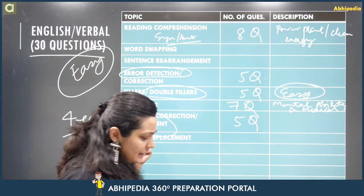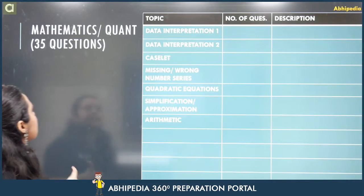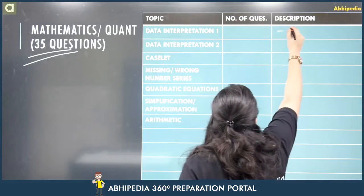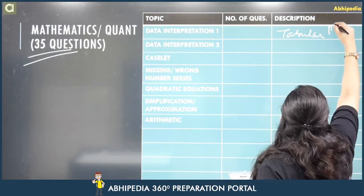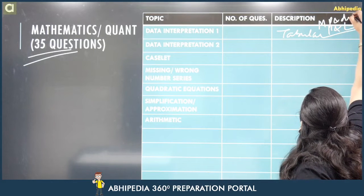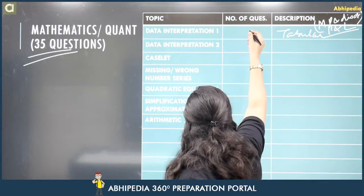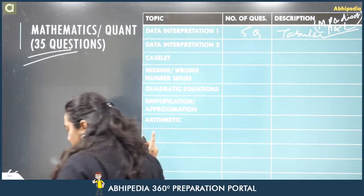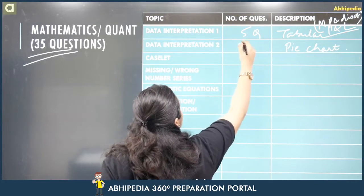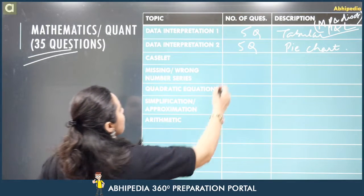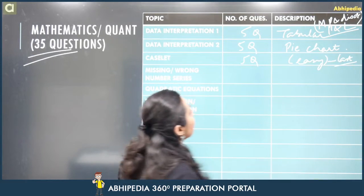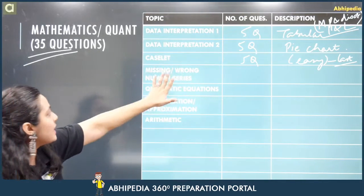Moving on to the mathematics or quant section — 35 questions as always. The first DI was a tabular DI related to profit and loss, more specifically on marked price and discounts — five questions. The second DI was a pie chart — pie charts have been appearing in most shifts — again five questions. Then there was a caselet — five questions. Students said it was easy to crack but a bit lengthy, so it was advisable to attempt it last.